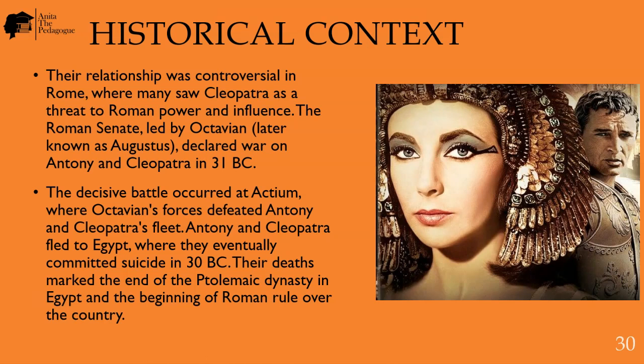The Roman Senate, led by Octavian — later known as Augustus — declared war on Antony and Cleopatra in 31 BC. The decisive battle occurred at Actium, where Octavian's forces defeated Antony and Cleopatra's fleet. Antony and Cleopatra fled to Egypt, where they eventually committed suicide in 30 BC.